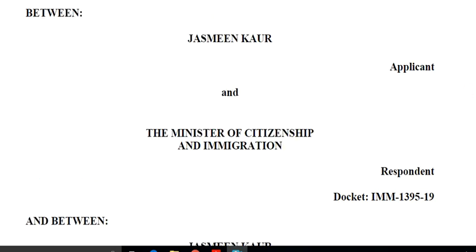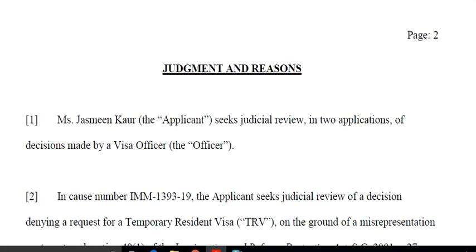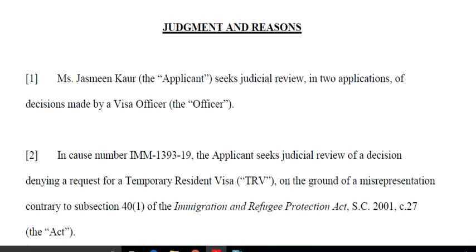You can see it on the screen — the name Jasmeen Kaur and the Minister of Immigration, Applicant and Respondent. Between Jasmeen Kaur and the Minister of Immigration, the application was refused. In the federal court, the judicial review was refused. We will look at some facts. Judgment and reason, number one: Ms. Jasmeen Kaur seeks judicial review in two applications — decisions made by the visa officer.